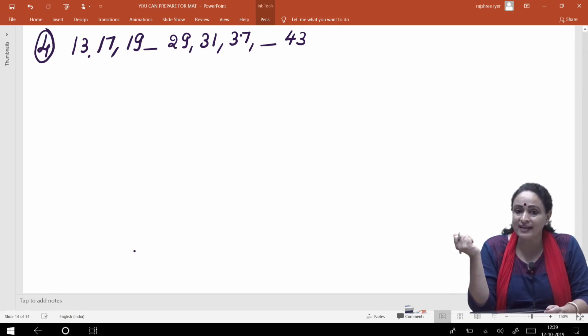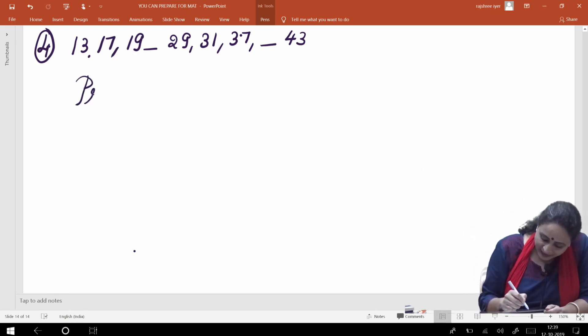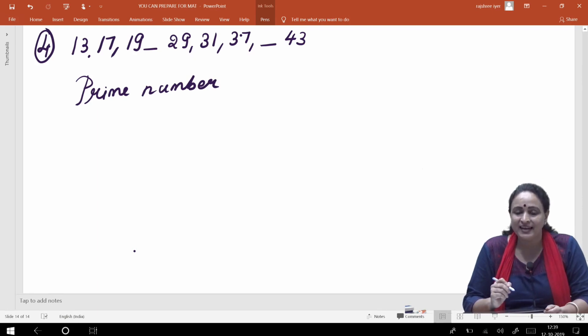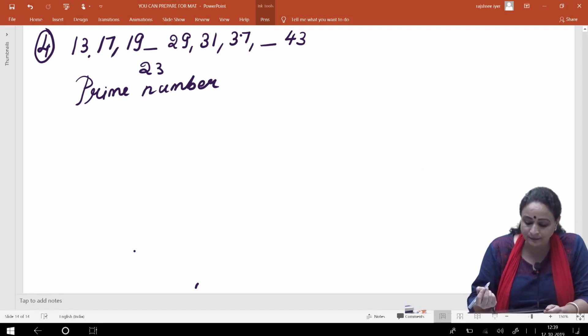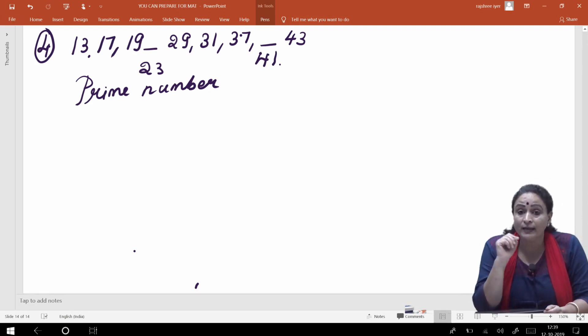Toh yahan bahut logon ka ekdum sahih answer bana hoga. Dekhiye, yahan jo pattern ban raha hai, yahan number saare prime number hain. Toh 13, 13 ke baad ka prime number hota hai, 17. And after that you have got - 17 ke baad kya aana chahiye. Yes, the number will be 23. 23 ke baad, aati hai 29, 31, 37. Then 37 ke baad, haan bolo? Yes, 41. Okay, so this is the way you have to think.